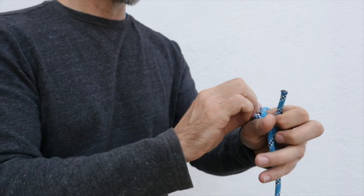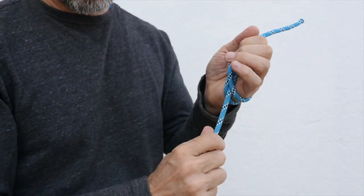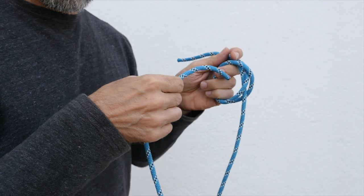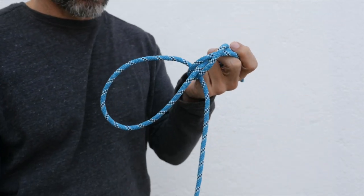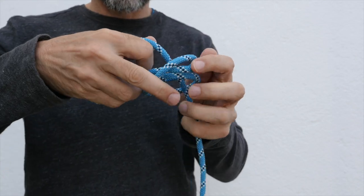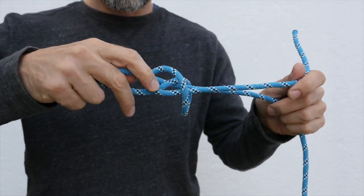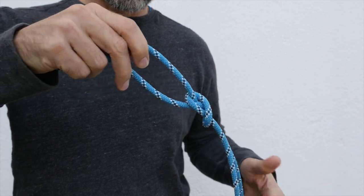Again, we'll tie a clove hitch, but this time pass the tail end through the hitch so that the clove hitch is actually tied to the rope itself. Snug up that clove hitch and now we have an adjustable loop.